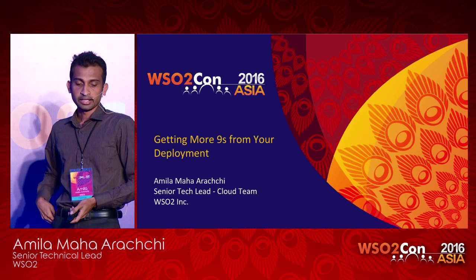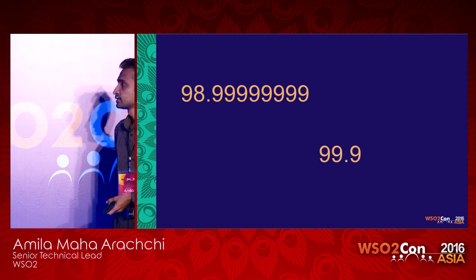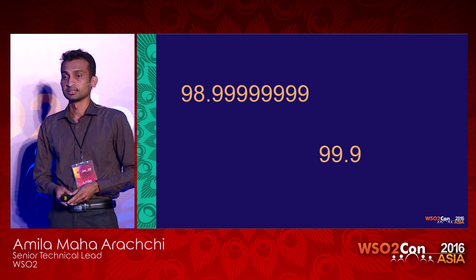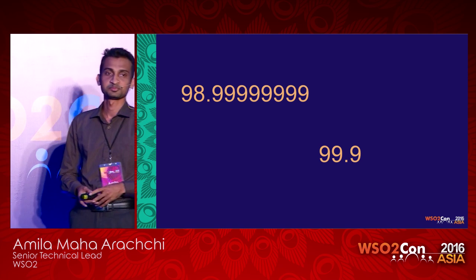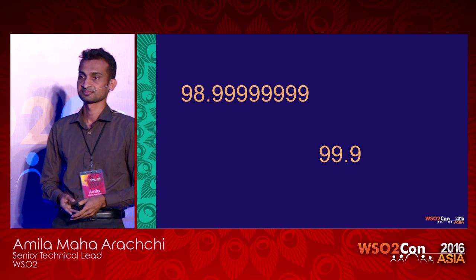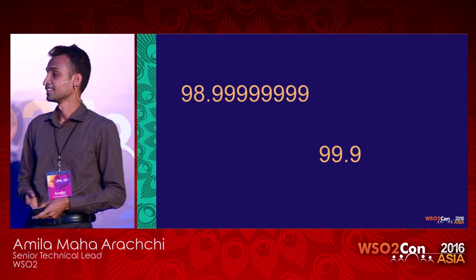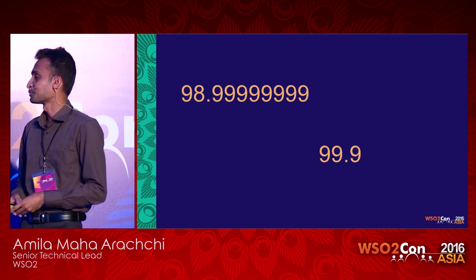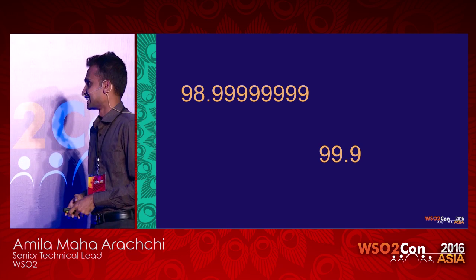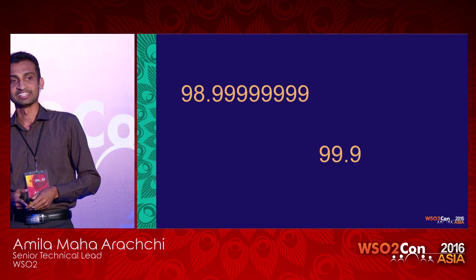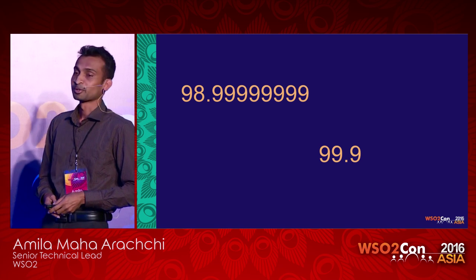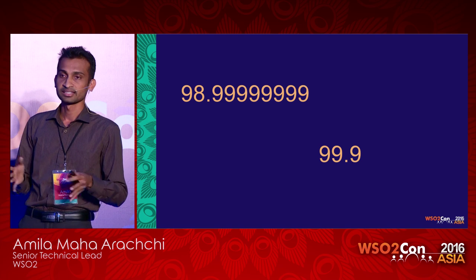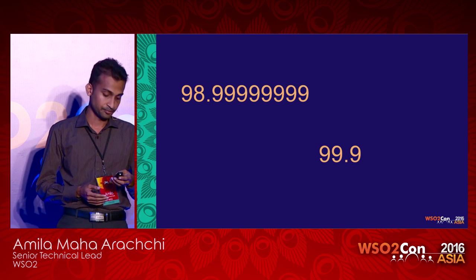I'll be talking about getting more nines from your deployment. Now to begin with, which has more nines — the top one or the bottom one? In numerical perspective, the top one has more nines, but on a deployment or availability perspective, the bottom one is having more nines. It's having three nines; the top one is only having one nine. We measure availability using this concept called measuring availability in the nines.